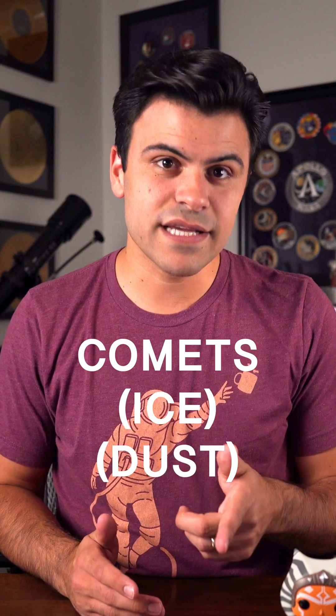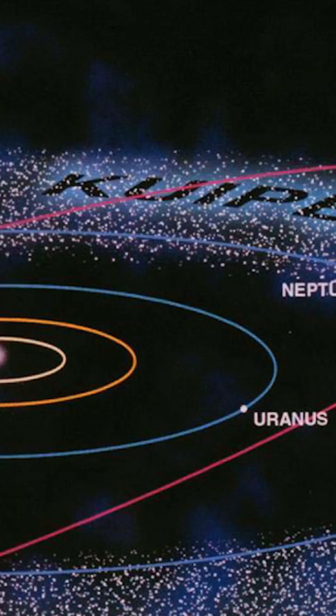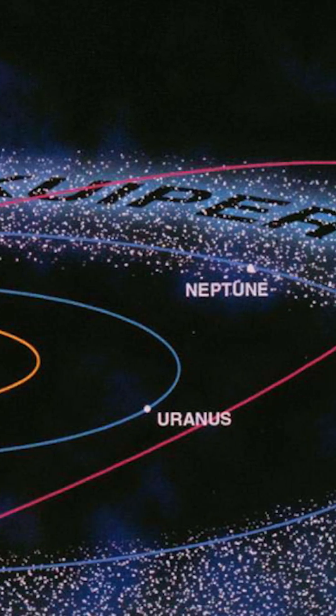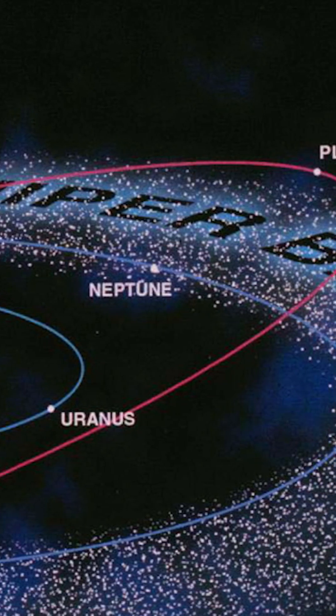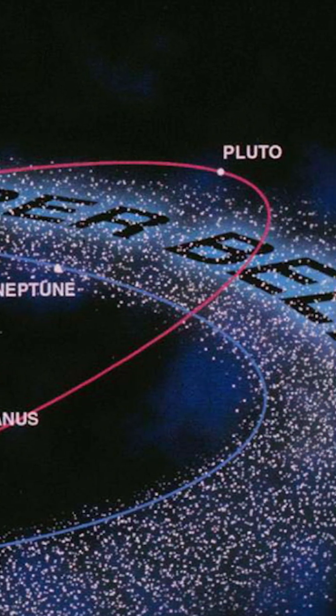Comets are made of ice and dust, and they orbit super far away in either the Kuiper belt or the Oort cloud, or on their own crazy path.